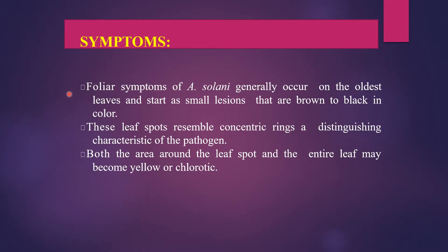Coming to the symptoms: this is a common disease of tomato occurring on the foliage at any stage of growth. The fungus attacks the foliage, causing characteristic leaf spots and blight. Early blight is first observed on plants as small black lesions mostly on the foliage. Foliar symptoms generally occur on the oldest leaves, starting as small lesions that are brown to black in color — first brown, then turning black.